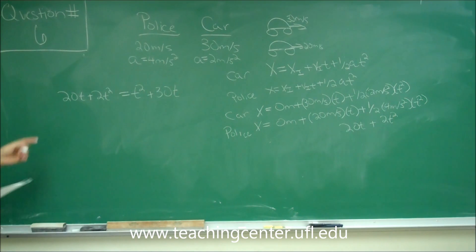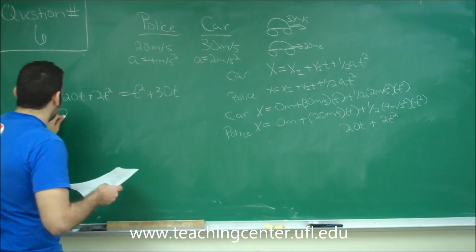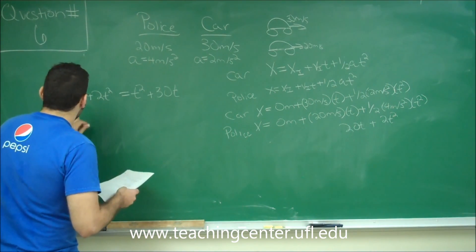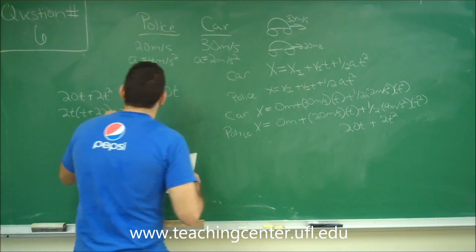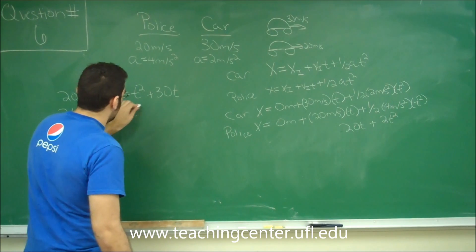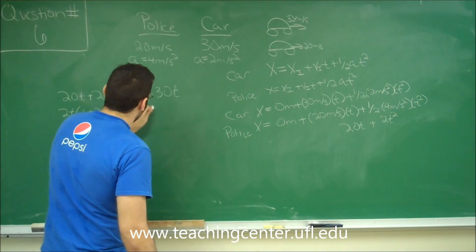And when we do this, let's go ahead and factor a 2t out of this side of the equation. So it ends up being t plus 20. And we're going to factor t out of this side of the equation. So it's t plus 30.